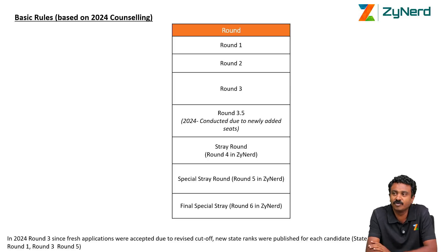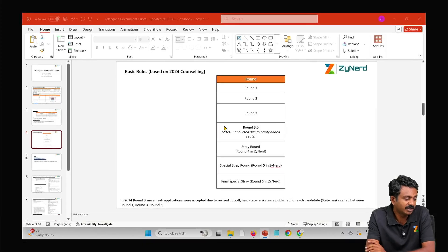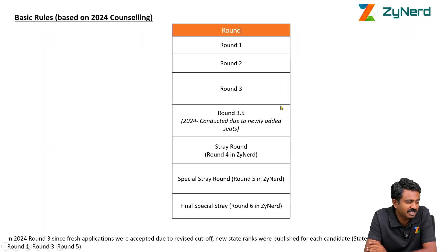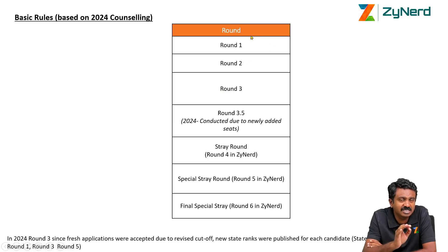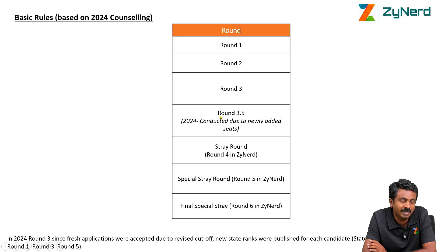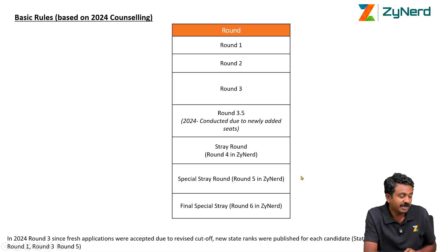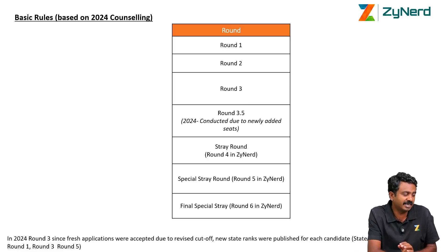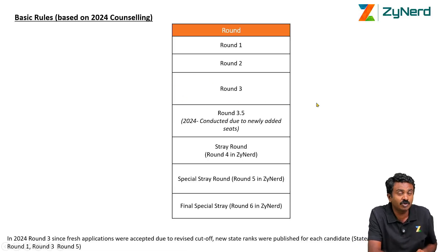The basic rules of counseling will be covered as a separate session. Round 1, round 2, and round 3 are the straightforward first three rounds — a candidate can move from round 1 to round 2 to round 3. Telangana has different free exit rules, so please check: once you exit, you might not be able to get back into the counseling. Round 3.5 was a special round conducted for vacant seats from round 3 plus newly added seats. Stray round is round 4, special stray round is round 5, and final special stray round is round 6. In 2024, fresh applications were allowed in round 3 due to revised cutoff and new state ranks being published.